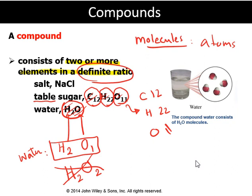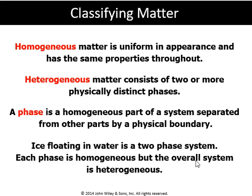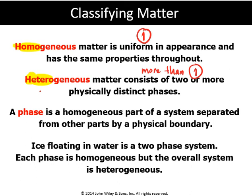Now, how about mixtures? A mixture is a combination of pure substances, and we always have two types of mixture. The terminology is homogeneous and heterogeneous. 'Homo' means one and 'hetero' means more than one. If only one component is visible in the mixture, we call it a homogeneous mixture. If more than one component is visible, we call it a heterogeneous mixture.